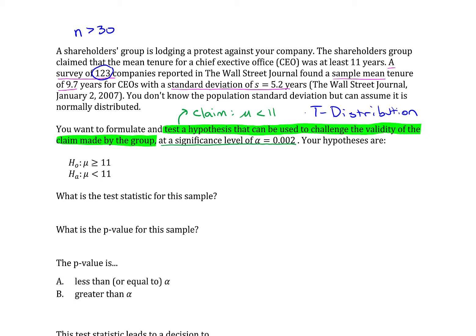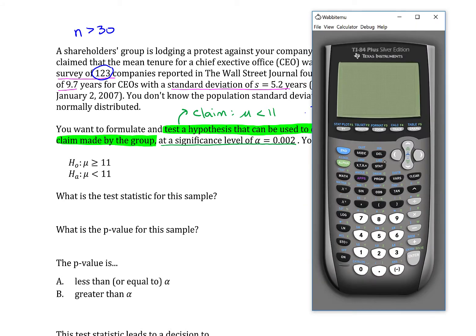Now, the test statistic and the p-value. So I'm going to use the TI calculator to come up with these. But if you're using different technology, just make sure you know how your technology works to come up with these values. So let's go ahead and get those for this particular problem. OK, so if you press the stat button, go over to the tests menu,